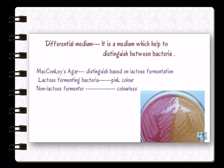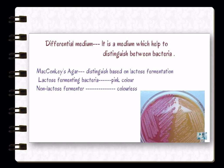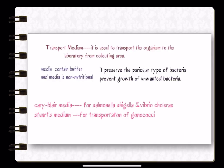Differential medium is used to distinguish between bacteria — specifically lactose fermenters versus non-lactose fermenters. MacConkey agar is the example: lactose fermenting bacteria appear pink, while non-lactose fermenters appear colorless.